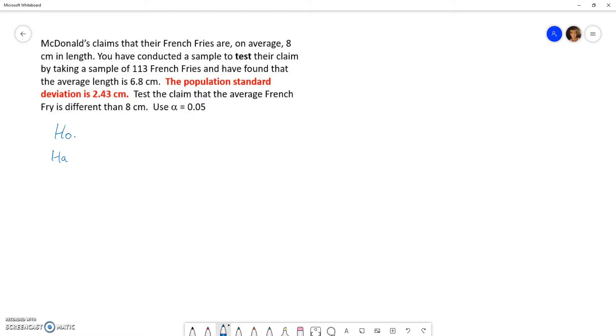So let's go through this question to identify the null hypotheses and the alternate hypotheses. This is step one and step two. So McDonald's claims, so this is basically the null hypotheses, that their French fries are, on average, eight centimeters in length. So we're going to have, it's talking about an average. This is the symbol for average. The population parameter, population average, in this case, is, this is always assumed to be correct. They are claiming that the average is eight centimeters.